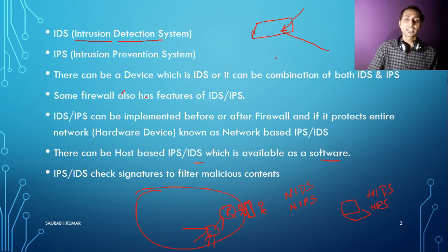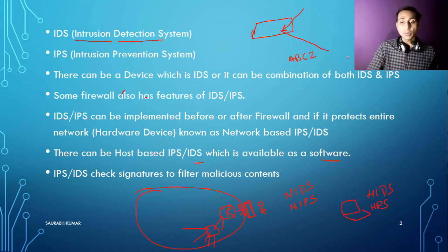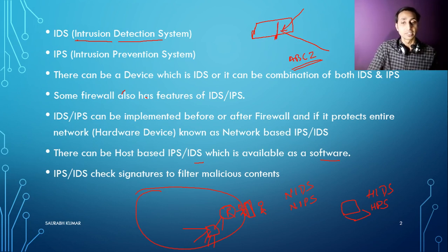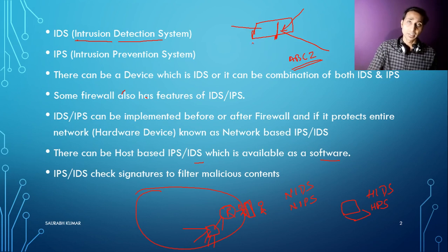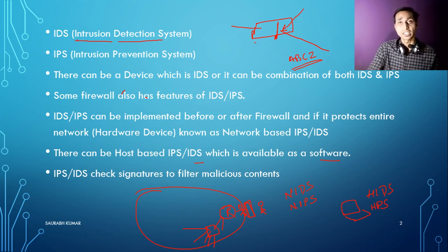For example, if there is a malicious content with signature ABC-Z, whenever any content passing through the IPS or IDS has the same signature already added to the device's filtering list, it will be detected as malicious content and stopped there. The device checks every packet and every content passing through it and is able to detect whether it is malicious or not.